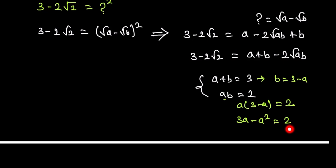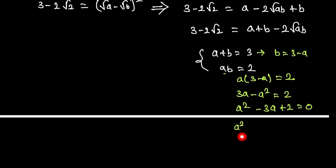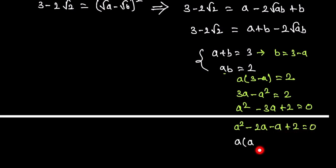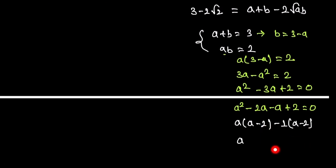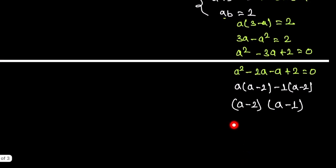Rearranging, we get a² - 3a + 2 = 0. Factoring gives (a - 2)(a - 1) = 0, so a = 2 or a = 1, and correspondingly b = 1 or b = 2.